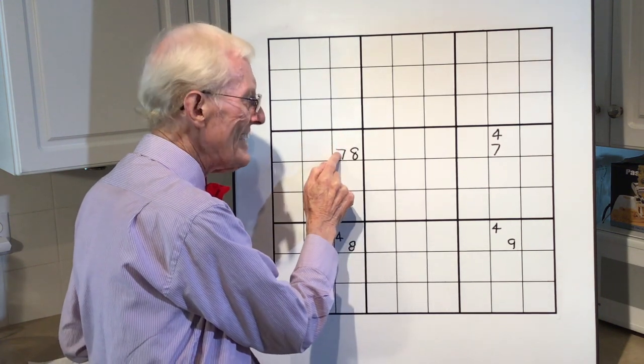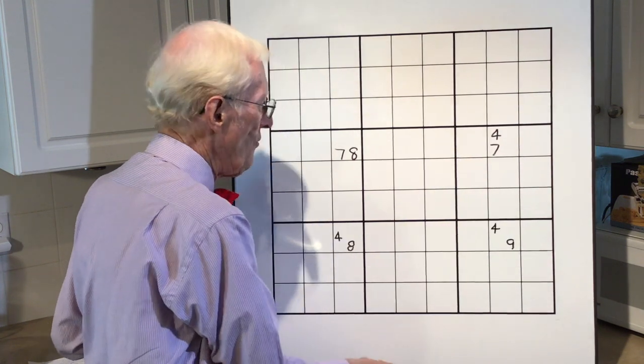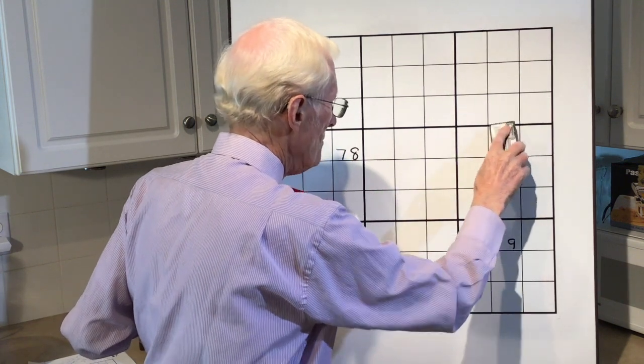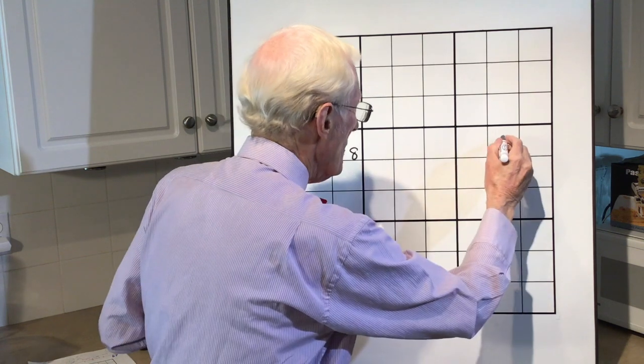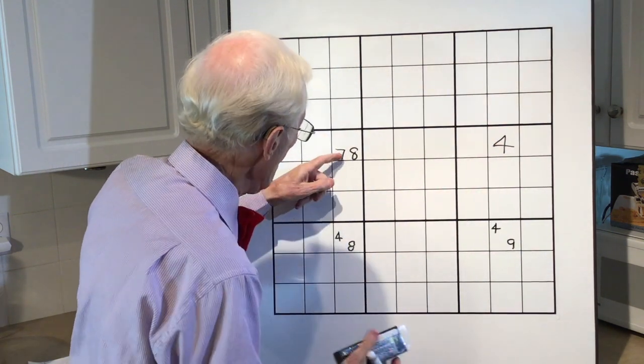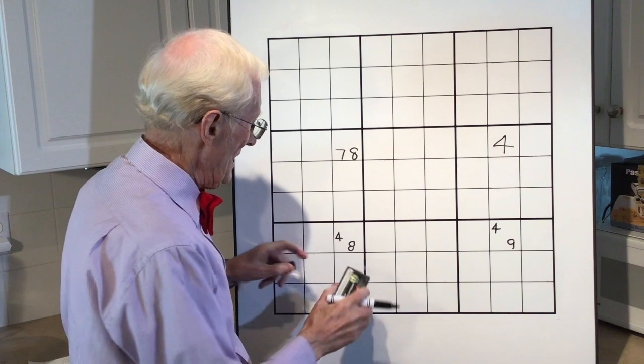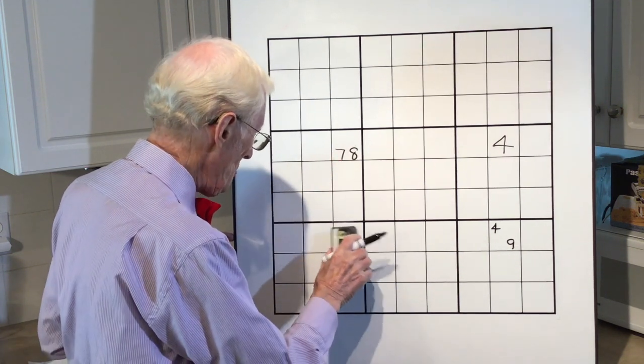If this is a 7, that becomes a 4. Let's make it into a 4 to help you. If that's a 7, this becomes a 4. Now, if this is an 8, this becomes a 4 as well. So, if that's an 8, this becomes a 4 as well.